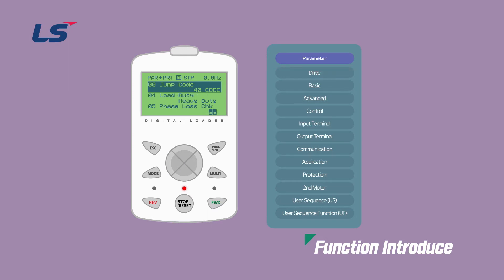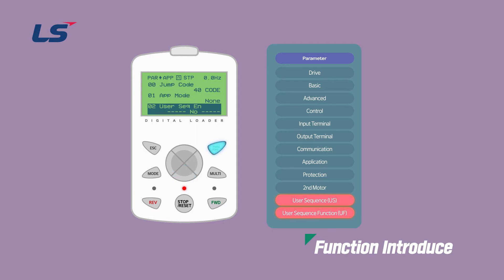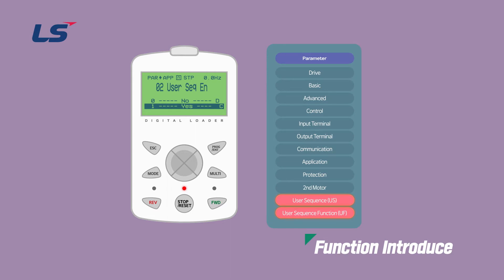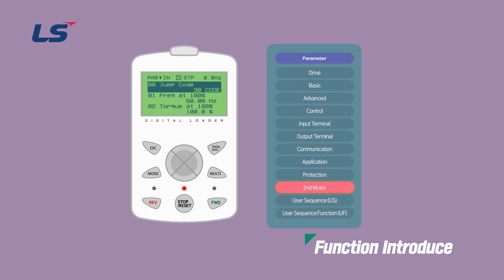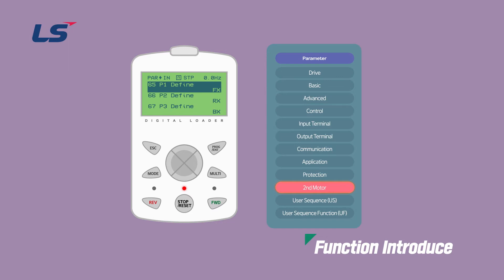Here, user sequence and user sequence function can be set to be used in application group 02 or not. And the second motor operation can be used when selecting one of the codes from input group 65 to 71 and setting it as the second motor, which is number 26.